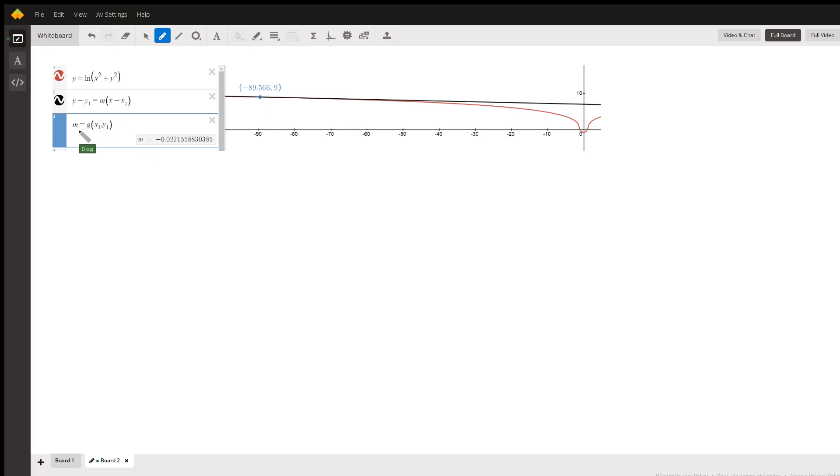And I've calculated the slope of a tangent line as the derivative at the point x sub 1, y sub 1. And then I've written in point slope form the equation of that tangent line.